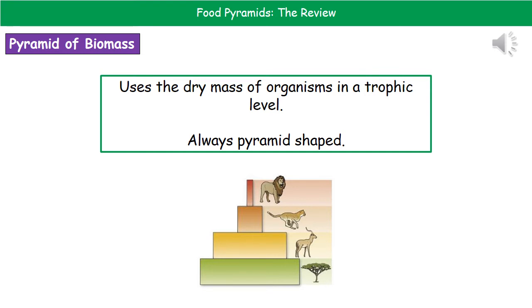The second type of pyramid is the pyramid of biomass. To draw a pyramid of biomass, we need to know the dry mass of the organisms in a trophic level. By using the dry mass, what we always have is a pyramid shape. No matter how many organisms there are, the biomass will always be greatest for the producers and then get smaller as we go up through those trophic levels.